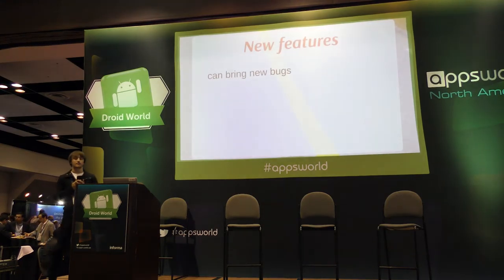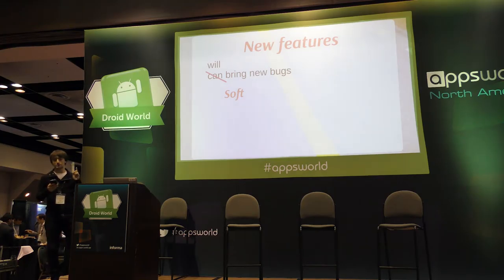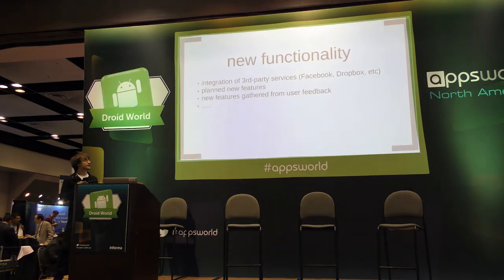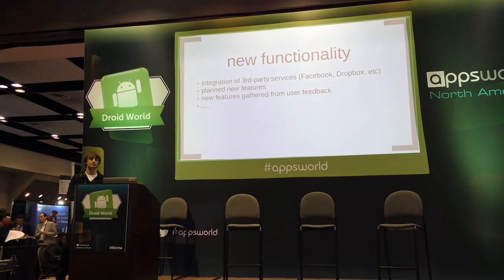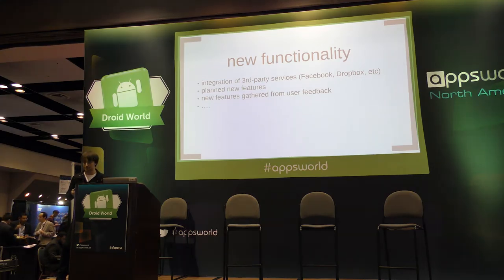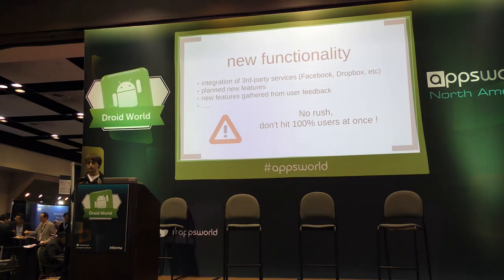You want to update your app to add new features — that will definitely bring new issues, but you can deal with it. I like to distinguish soft and hard new features. Soft features are any new functionality of your application: integration of third-party services, planned new features, new features gathered from user feedback. One thing to remember: don't rush. Don't try to please all of your end users at once. When you create a new feature it can add bugs, or you can misunderstand user feedback.